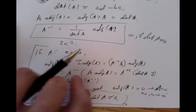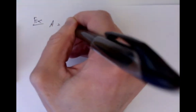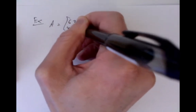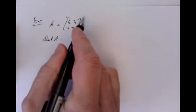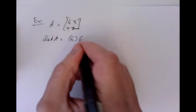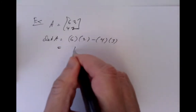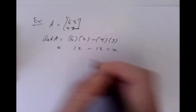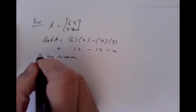Let's try an example: A = [6, 3; 4, 2]. The determinant is 6×2 minus 4×3, which is 12 minus 12 equals 0. So there is no inverse, because determinant 0 is exactly the case that fails to have an inverse.